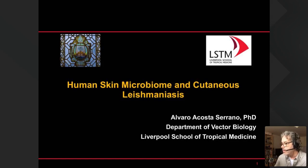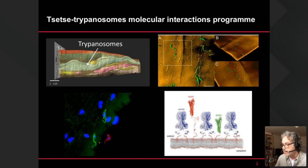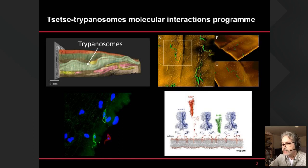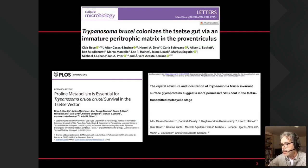A lot of people know me because of my work with trypanosomes and tsetse flies, which is more a fundamental aspect of what we do here in Liverpool. When Marianne first contacted me, she wanted me to speak about that, but I thought for the ISNTD community it would be better to talk about something more translational. So I decided to talk about leishmaniasis. For those interested in our work on the basic biology of trypanosomes and tsetse flies, there are some publications you can look at.